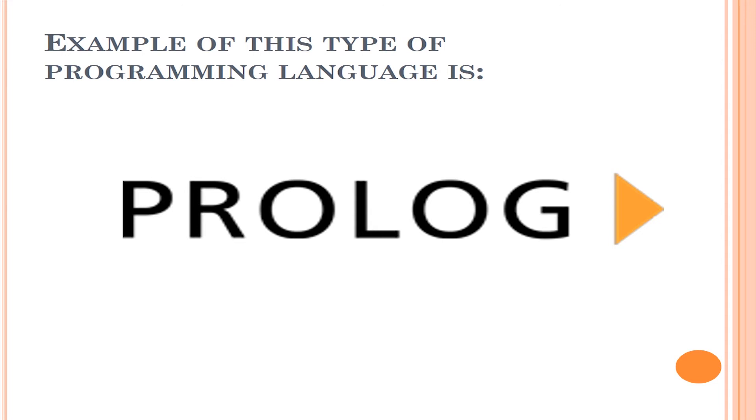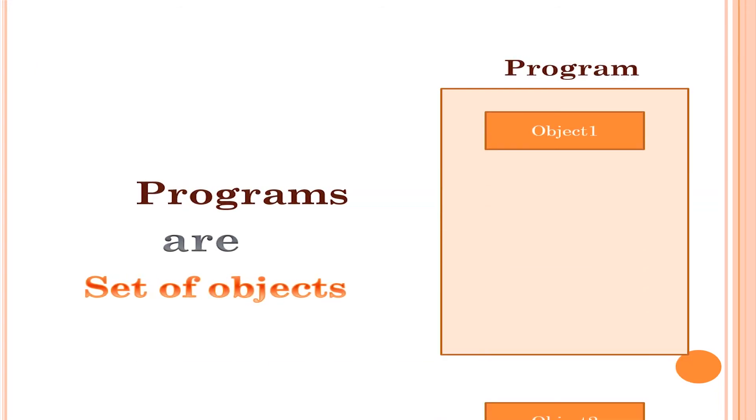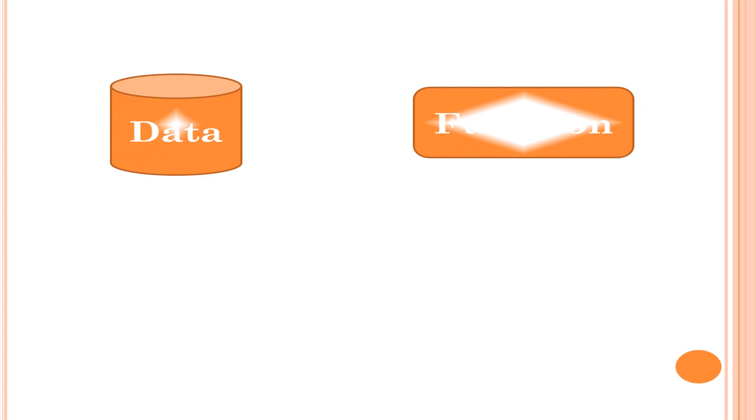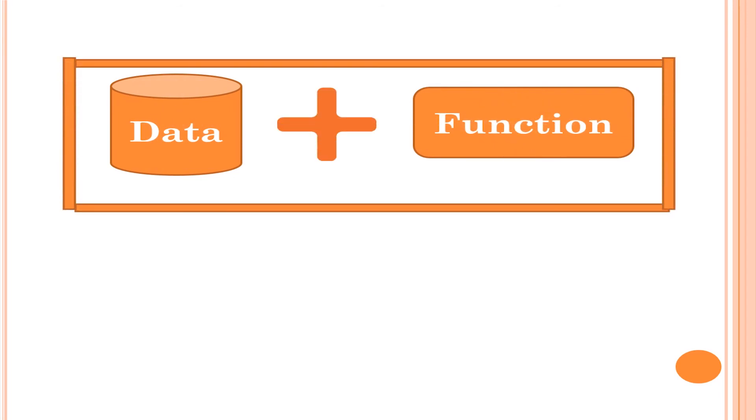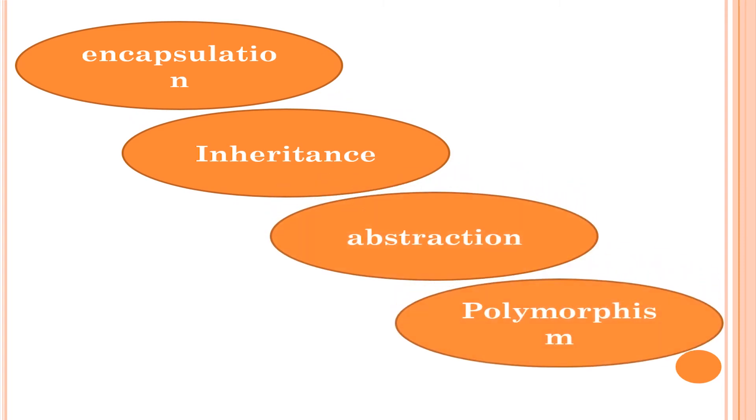Next is object-oriented programming paradigm. In this, a program is constructed as a set of objects which interact with each other through message passing. It focuses on data and functions and wraps them together into a single unit thereby providing data security. It supports encapsulation, inheritance, abstraction, polymorphism, etc.